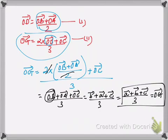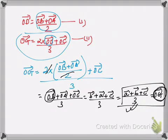So this is what we derived: the position vector of centroid G equals vector A plus vector B plus vector C divided by 3. We have successfully proved this result. I hope it is clear to you — thanks for watching.